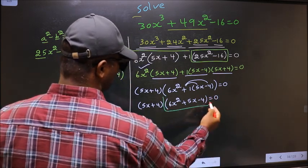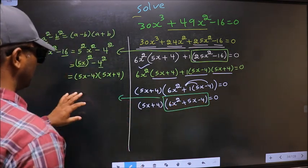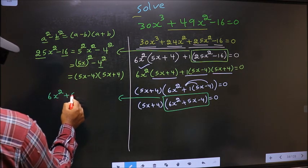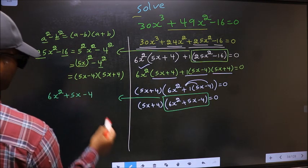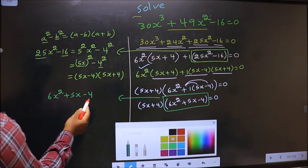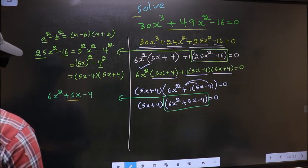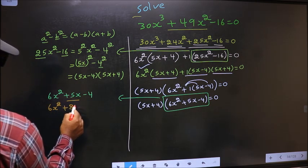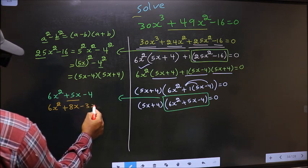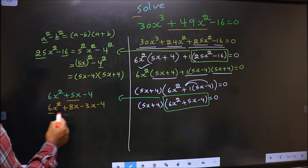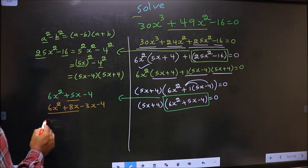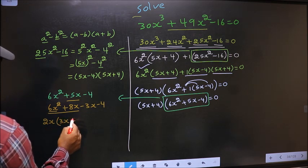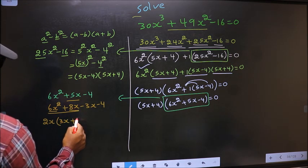Now I will factorize the quadratic 6x² + 5x - 4. To factorize this, we split the middle term +5x. So in place of +5x I write +8x - 3x, giving 6x² + 8x - 3x - 4. From the first two terms, what can be taken out common is 2x, giving 2x(3x + 4).